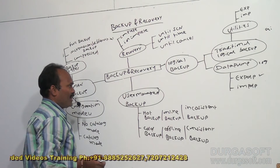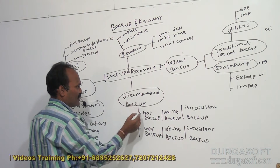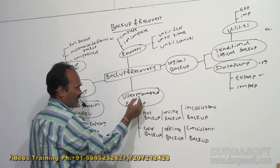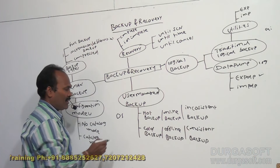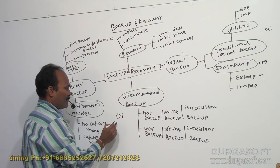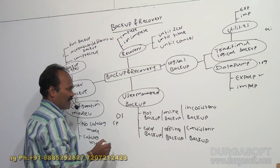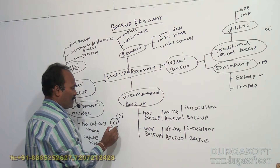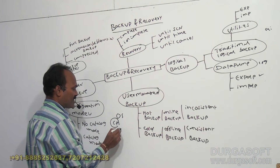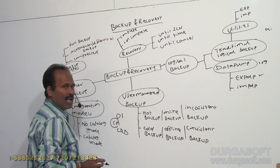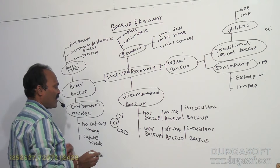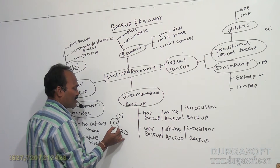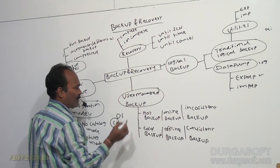User-managed backup can be achieved by using operating system commands — like copy command, move command, or the CP command — so we can take backup of CRD files: control files, redo log files, and data files. By using operating system commands, we can perform this hot backup.